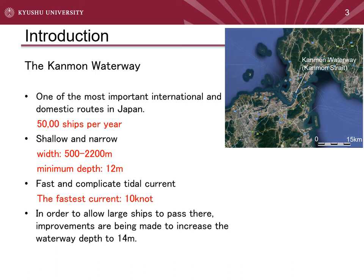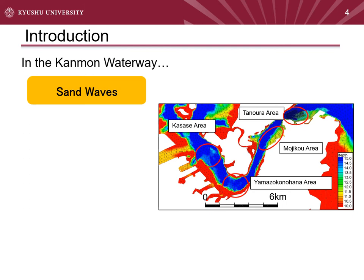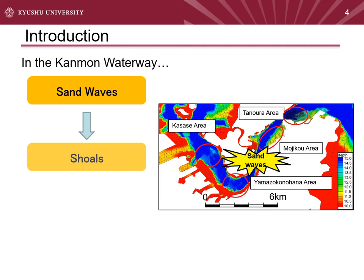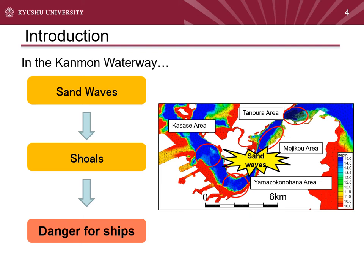In order to allow large ships to pass, improvements are being made to increase the strait depth to 40 meters. However, in the Kanmon Strait, sand waves are developing and create shoals, which is dangerous for ships. Sand waves are developing in the Kasase area, Yamazoko-Nohana area, Mojiko area, and Tanora area. In this presentation, I will talk about the Tanora area.